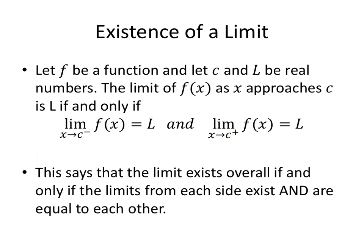What does this mean? It means that the limit exists overall if and only if the limits from each side exist and are equal to each other. So we know a limit exists because the limit from the left is equal to the limit from the right. We kind of had a basic idea of this in section 1.2 when we were looking at graphically and numerically. But now it's solidified for us with actual math detail.